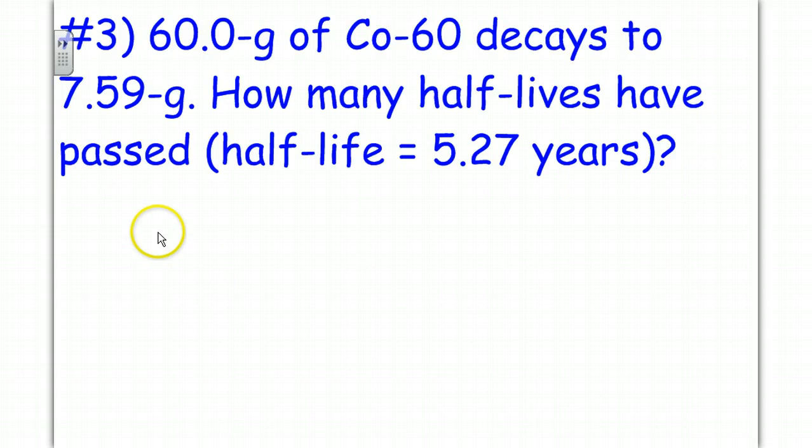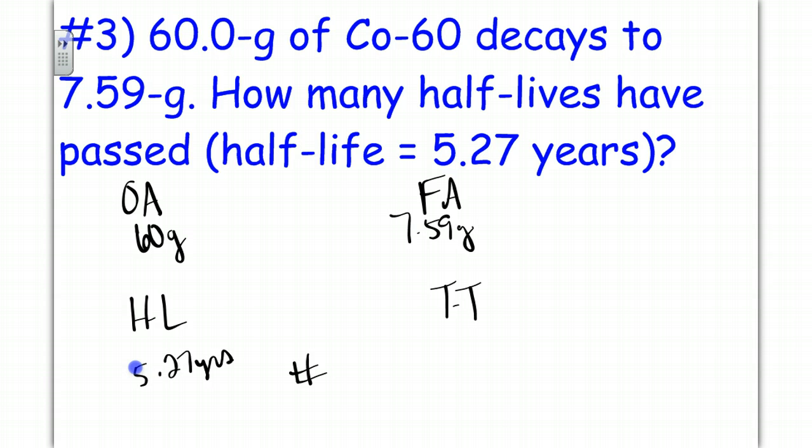Okay, we have our original amount, final amount, half-life, total time, and the number of half-lives which occur. We are given 60 grams that will decay to 7.59 grams. We have a half-life of 5.27 years, and what is the total time? We're being asked how many half-lives have passed. So while we don't know the total time, we really are trying to determine how many half-lives have occurred. So we will determine that by taking our samples, our amounts, and cutting them in half until we reach the final amount. So we get 30, 15, and 15 divided by 2 is 7.5. Though it's not exactly 7.59, we can approximate and state that approximately 3 half-lives have occurred. So that would be our answer.